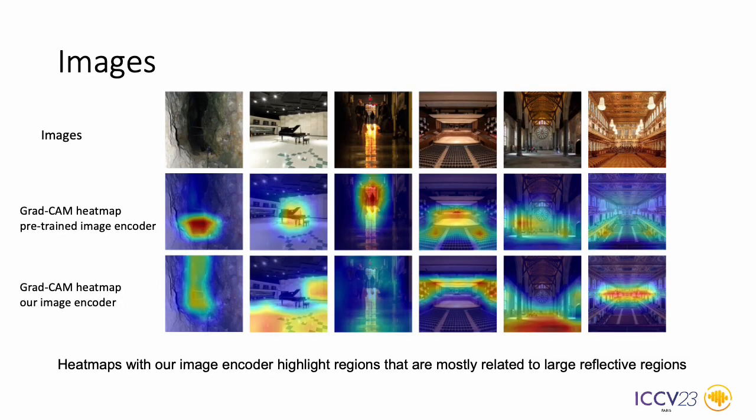We also analyzed the heat map to visualize where our visual encoder is focusing on. It is interesting to see that our visual encoder focuses more on the region that is relevant to the reflective area in a space than the ImageNet pre-trained visual encoder.